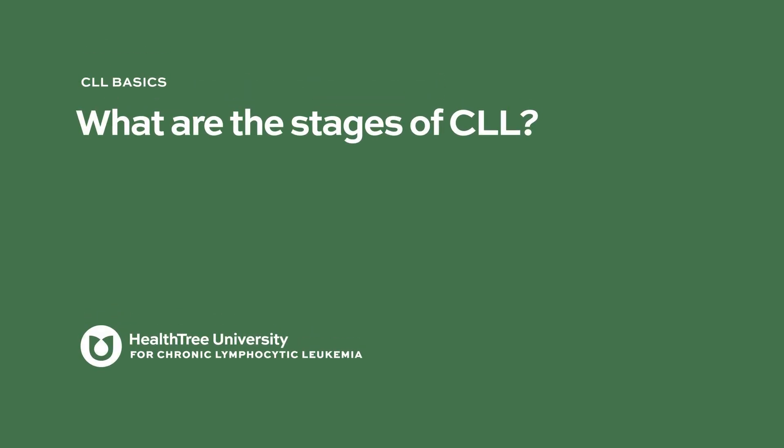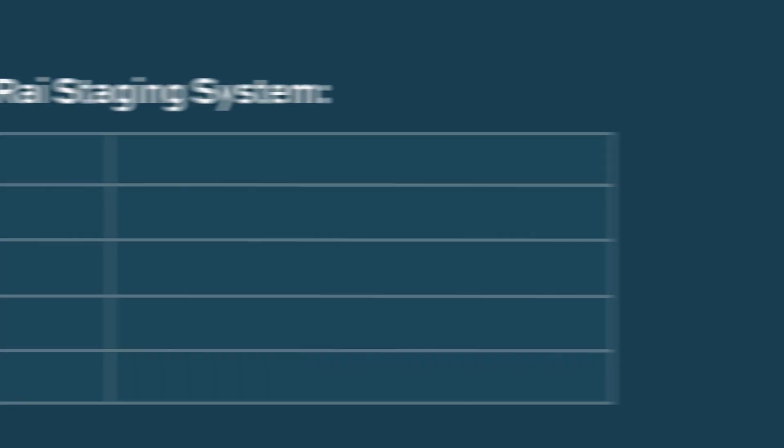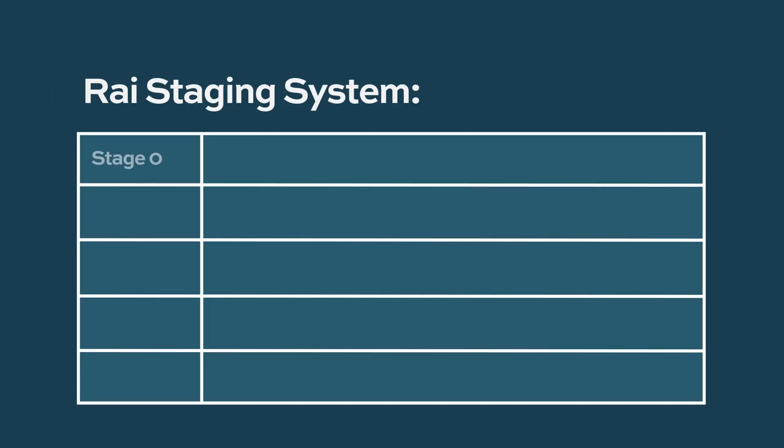What are the stages of CLL? In the United States, the Rai staging system is what we use to stage chronic lymphocytic leukemia. There's Rai stage 0, 1, 2, 3, and 4.